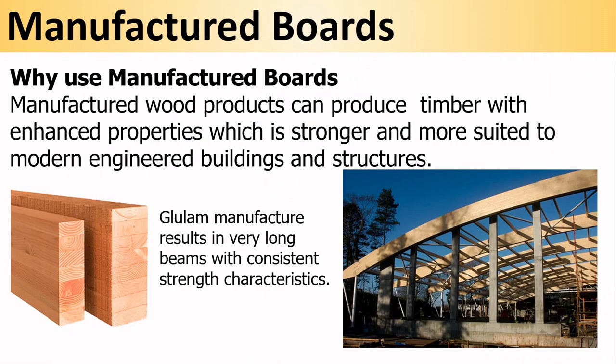Manufactured wood products can produce timber with enhanced properties, which is stronger and more suited to engineered buildings and structures. Glue lam is pieces of softwood laminated together with very strong glue, which can result in very long beams with consistent strength characteristics — much more consistent than a standard wooden beam.